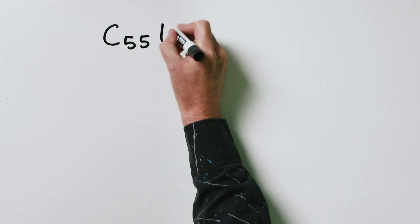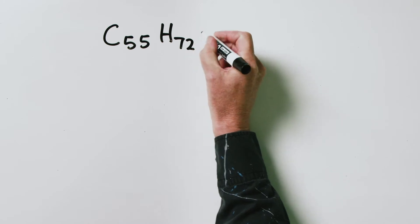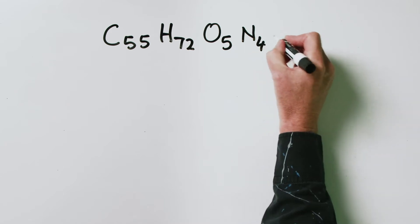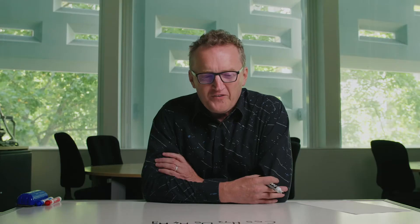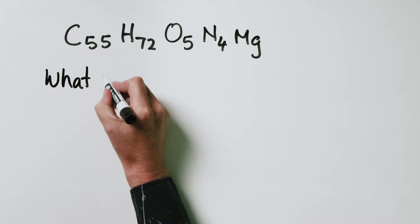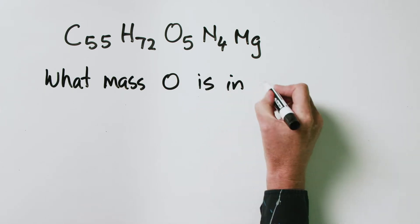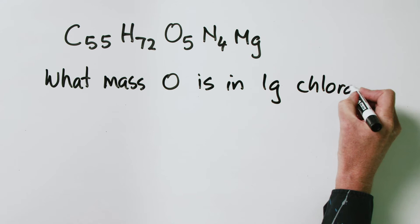Chlorophyll is a very, very large molecule, and it has the chemical formula C55H72O5N4Mg. So there are a lot of atoms in one molecule of chlorophyll. The question that we're going to be asking today is: what mass of oxygen is in one gram of chlorophyll?